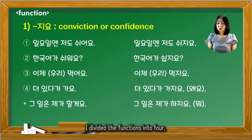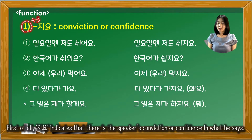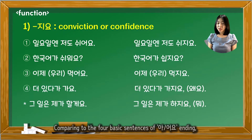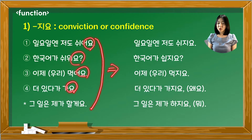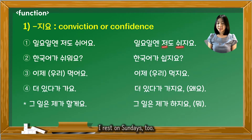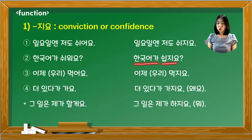I divided the functions into four. First of all, 지요 indicates that there is a speaker's conviction or confidence in what they say. Comparing to the four basic sentences of 아/어요 ending, you would feel it easier to understand the first function of 지요. For example: 'I rest on Sundays too.' 한국어가 쉽지요? — Korean is easy, isn't it?